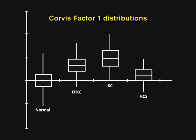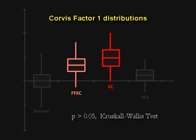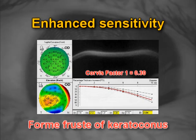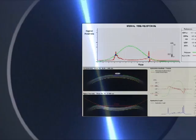CORVIS factor 1 had statistically significant distribution differences between normal and ectatic cases, but no differences were found between the KCS and normals, as well as between the forme fruste keratoconus and keratoconus cases. The visualization of the corneal response to the non-contact air pressure for assessing biomechanical properties enabled enhanced sensitivity to detect ectasia on corneas with normal topography, and also were specific for ruling out an ectatic pattern on cases with suspicious topography.